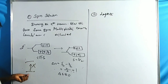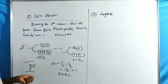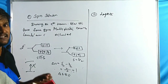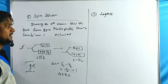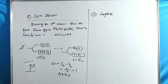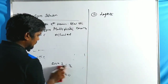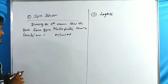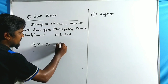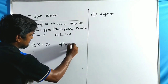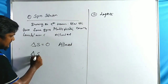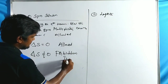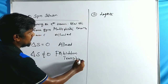Since delta S ≠ 0, these transitions are not allowed — they are forbidden. If the spin states of both ground and excited energy levels are the same, it is an allowed transition; otherwise it is a forbidden transition. In summary, the spin selection rule states: delta S = 0 means allowed transition; delta S ≠ 0 means forbidden transition.